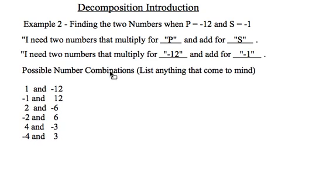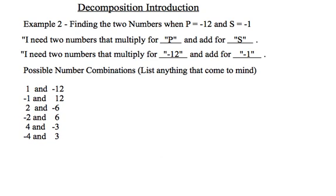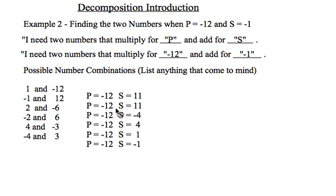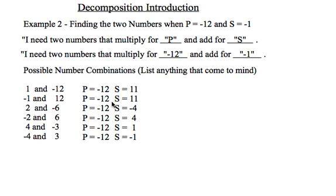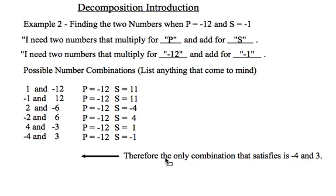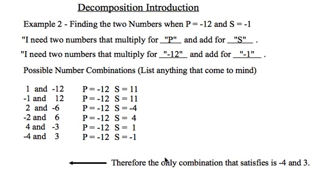Here are some possible combinations that I came up with. And again, I want to multiply the two together. You'll notice that all of these multiply for negative 12. Then I just need to check whether they add or sum for negative 1. So if I take a minute here to check, I have a sum of 11, a sum of 11, negative 4, 4, 1, and lastly I have negative 1. So my combination that works would be negative 4 and 3, and you may wish to pause this video right now and have a look at that and make sure you understand where those came from.